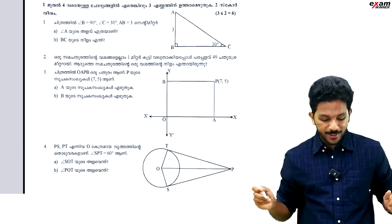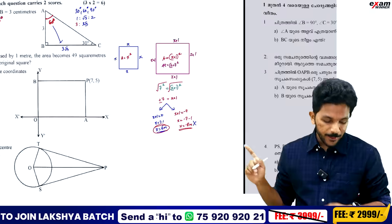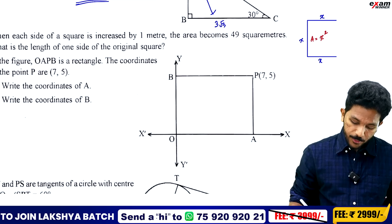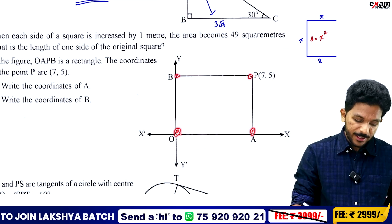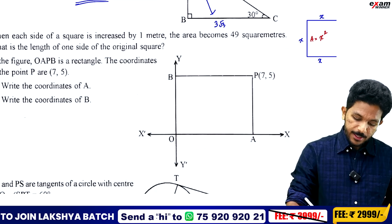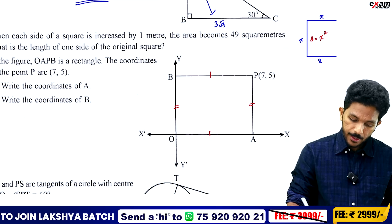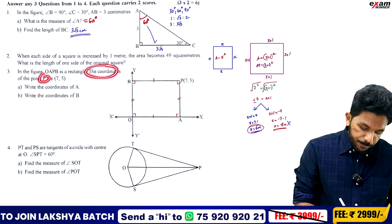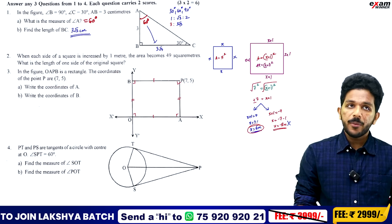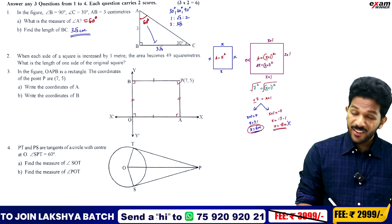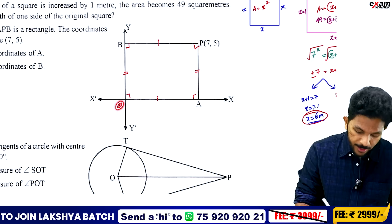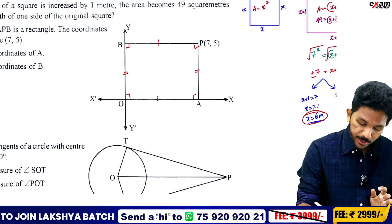Next question is coordinates. In the figure, OAPB is a rectangle. If the coordinates of P are (7, 5), find the coordinates of A and B. What are the coordinates of O? O is at the origin, which is (0, 0).